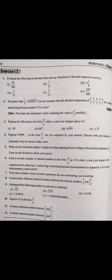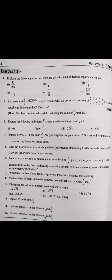For example of non-terminating repeating: when we divide 10 by 3, we get 3.3333... This is non-terminating because the remainder is never zero. And since the digit 3 keeps repeating, this is a non-terminating repeating decimal expansion.